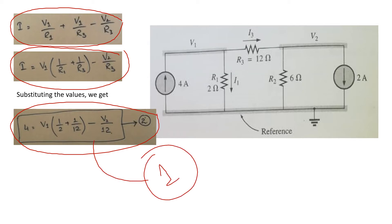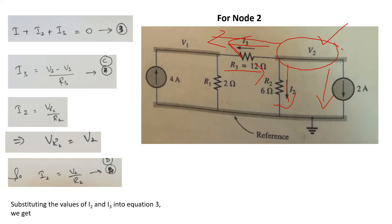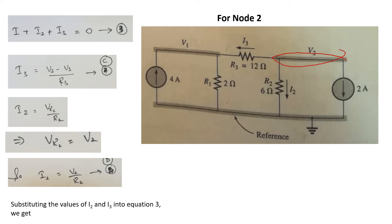Now we have to calculate the equation of V2. Before applying KCL to node 2, we will define the direction of the currents. I is basically in the downward direction, I2 is leaving the node, and I3 is also leaving the node. When we are taking V2 as a reference, it means if V2 is at higher potential, so the current will flow from higher to lower potential. That is why we take the direction of I3 in that direction. When we apply KCL to that node, you will see that I is leaving the node, I2 is leaving the node, and I3 is leaving the node.